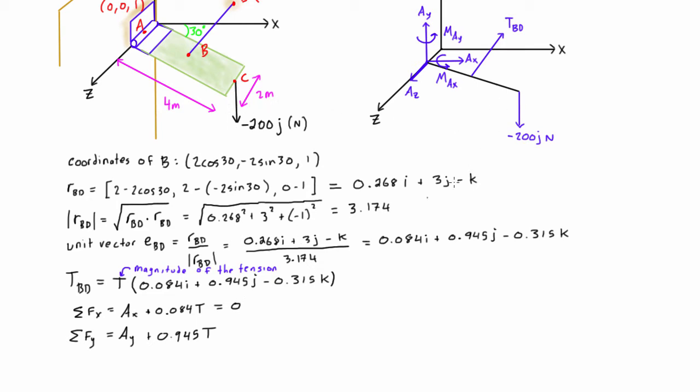We also have to subtract out this applied force, so we have minus 200 newtons. All of these units are in newtons, so that equals zero. For the sum of forces in the z direction, we have Az minus the z component of the tension force, minus 0.315 times the magnitude, and again that's all equal to zero.